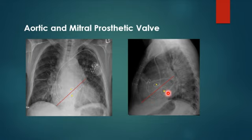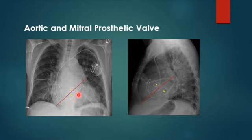This patient also has a pacemaker with two leads — one at the right atrium and one at the right ventricle. Due to cardiomegaly, the heart is slightly shifted.